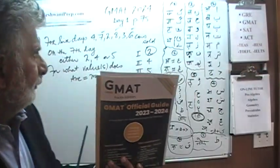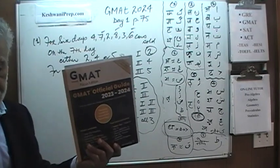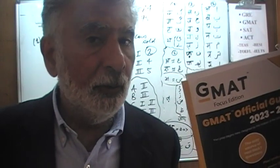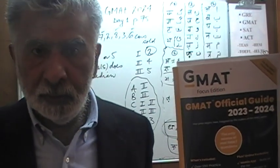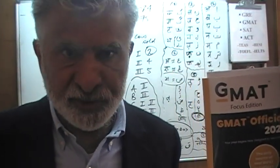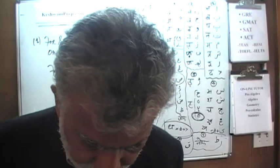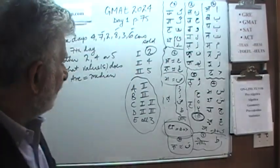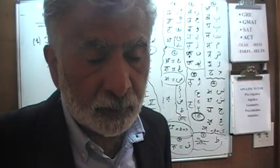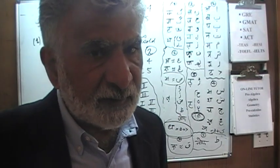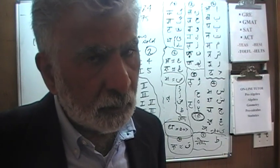Hello, my name is Keshwani — K-E-S-H-W-A-N-I. We are here because we want to prepare for the GMAT. We'll be using this book, the Official Guide 2024. If you do not own this book already, you're going to need it immediately. The math problems in the book begin on page 75. Every time I set up a problem on the blackboard, pause the video, solve it yourself, and then compare your work with what we're going to do together.